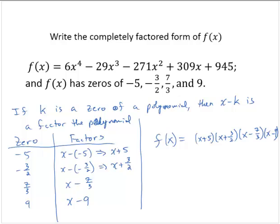But if we were to multiply that whole thing out, we would have an x to the fourth power, and we need a 6x to the fourth power. So what we do now is we put that 6 out in front, and that is the completely factored form of the polynomial.